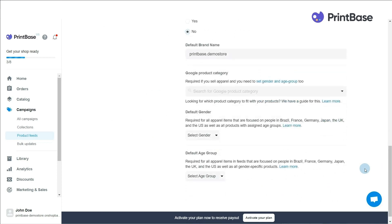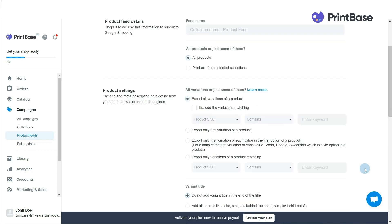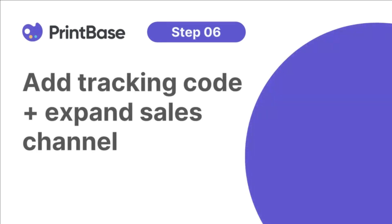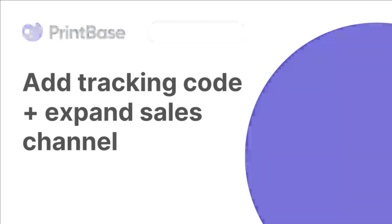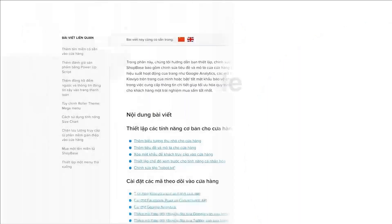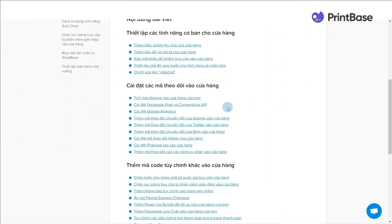After you have finished the basic settings, you need to add tracking codes and upload your products on sales channels. First, you need to get your Facebook Pixel and Google Ads tracking codes. If you have any issue during this part, please refer to our detailed guides in the description box.